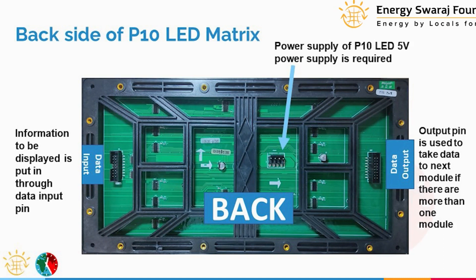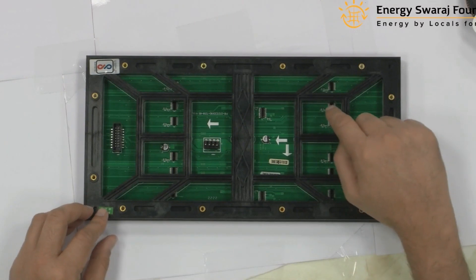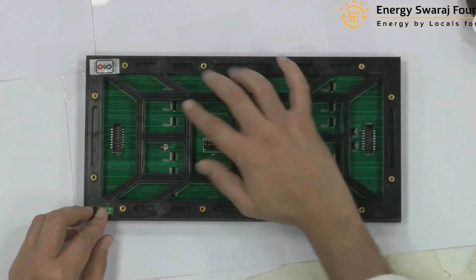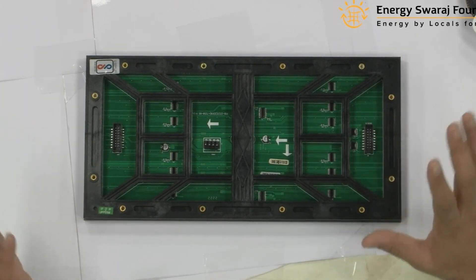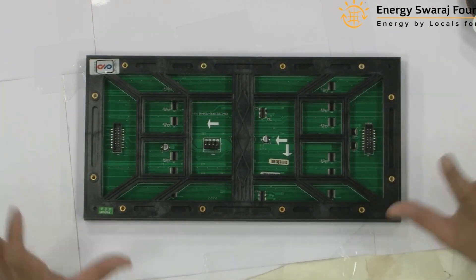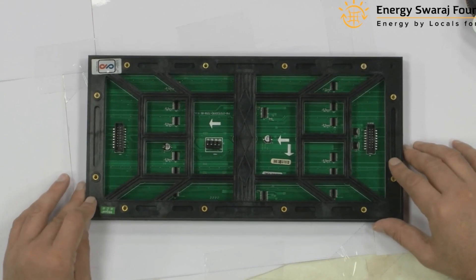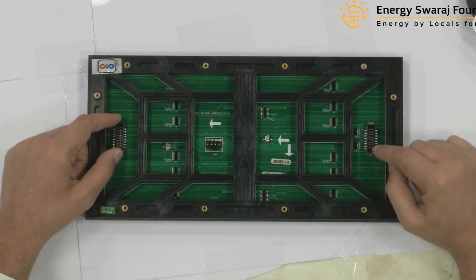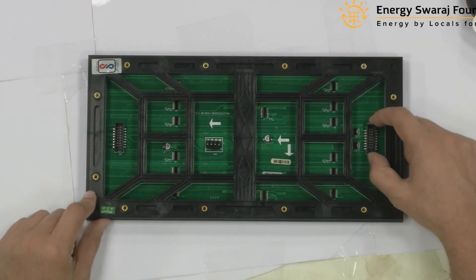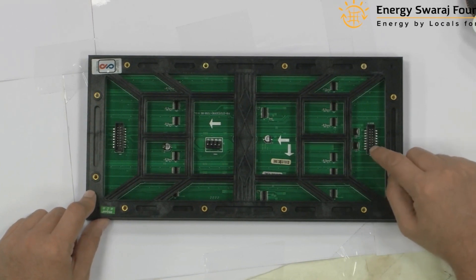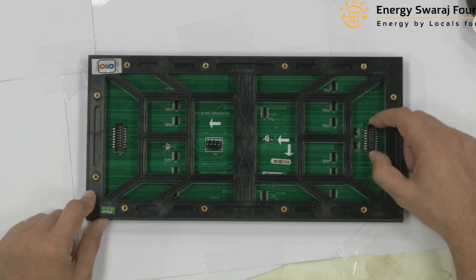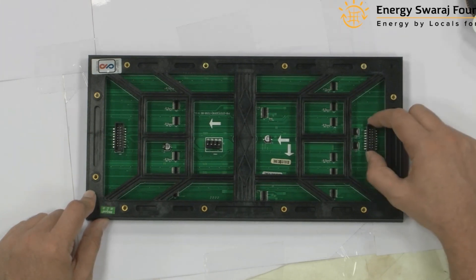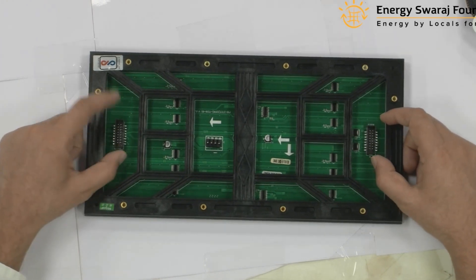The back side looks a little complicated but it is actually very simple. There are some small ICs — you don't need to worry about what those ICs are. The two important things on the back side are: this 16-pin connector (8 by 8 arrangement) called the FRC data pin, and another 16-pin connector on the left-hand side.